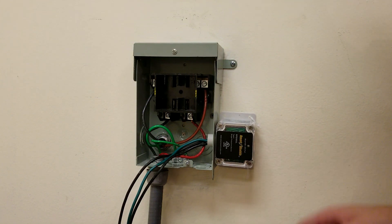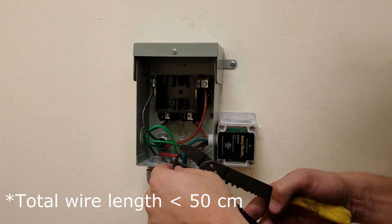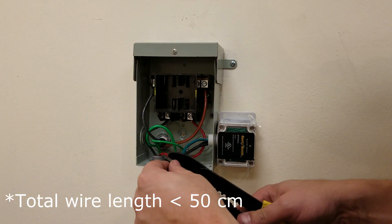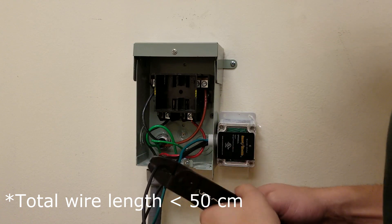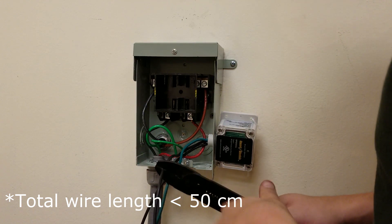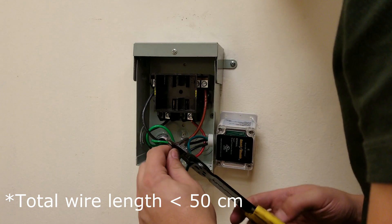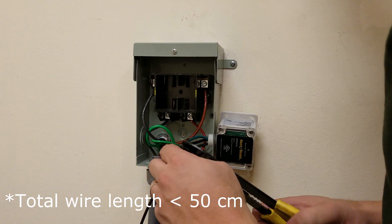Choose a mounting location that will minimize the length of wire needed to connect the SPD. Cut the wires to the shortest length possible for the installation to minimize the wiring impedance to surge currents. The total length of the connections of the SPD to the network and ground terminal block should not exceed 50 centimeters.